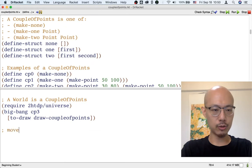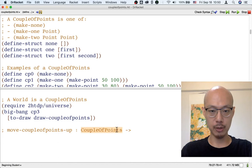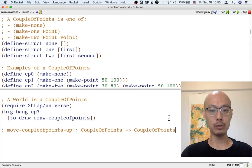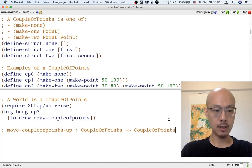So we're going to use the name moveCouplePointsUp, and it's going to take a couple of points, so that's the world as input, and it's not going to return an image. Watch out, the signature tells us a lot here. It tells us that we're going to return a couple of points, not an image.